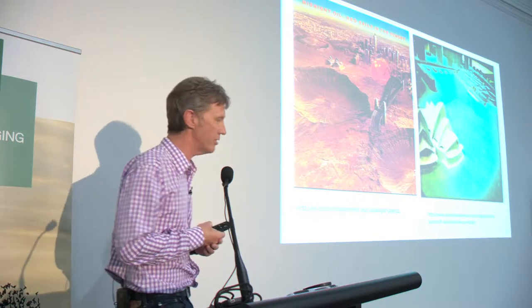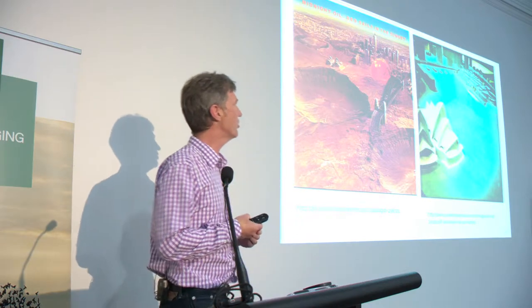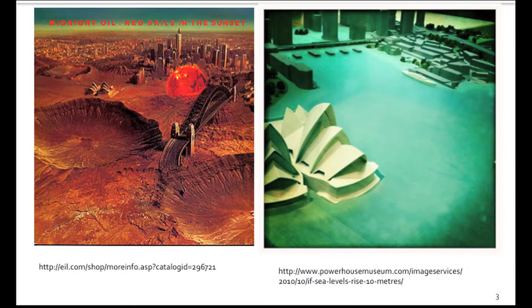The one on the right-hand side is from the Powerhouse Museum's Ecologic, modelling a 10-metre rise in sea level at Circular Quay with the Opera House. You can see that the Circular Quay ferry terminals are gone and there's water back into the city buildings behind it. The Opera House in the foreground is above water, but not entirely. There are certain cultural images that influence the way in which we might perceive, and the iconic features are part of them.